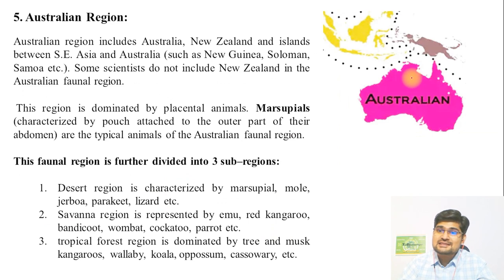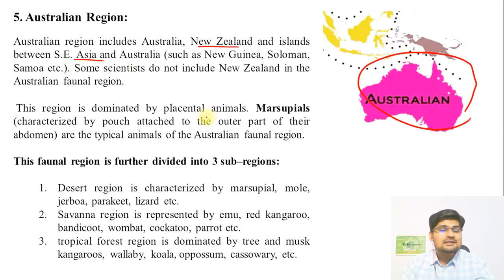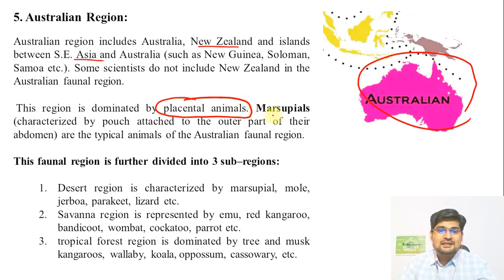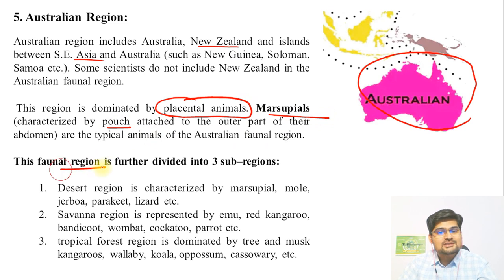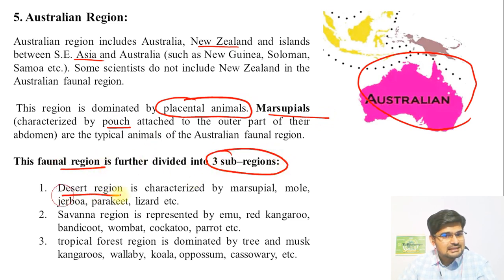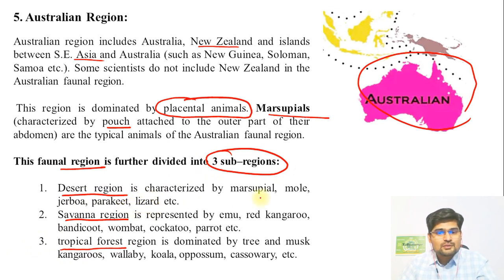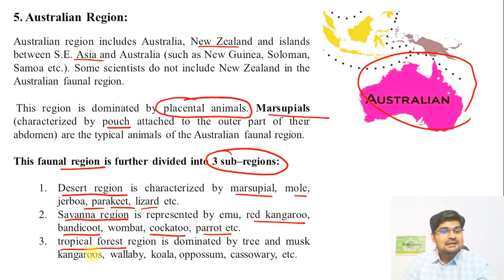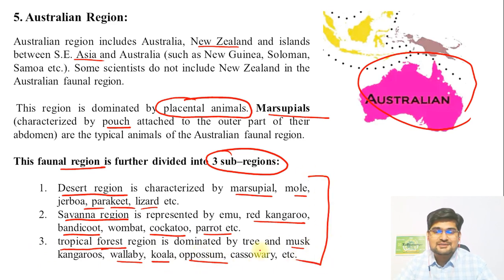The Australian region includes Australia, New Zealand, and some islands nearby. This region is dominated by placental animals — specifically marsupials, characterized by pouches in their stomachs in which they keep their babies, such as Kangaroos. It is further divided into three sub-regions: desert, savannah/grassland, and tropical forest. In desert: Marsupial Mole, Jerboa, Parakeet, Lizard. In savannah: Red Kangaroo, Emu, Bandicoot, Cockatoo, Parrot. In tropical forest: Musk Kangaroo, Wallaby, Koala — which feeds on eucalyptus — and Opossum.